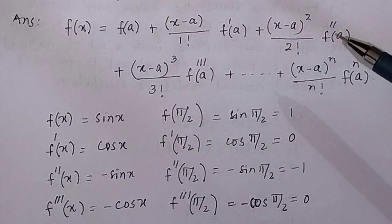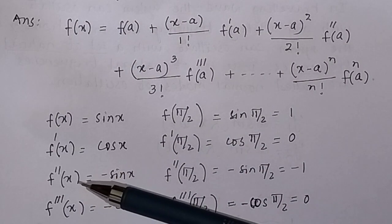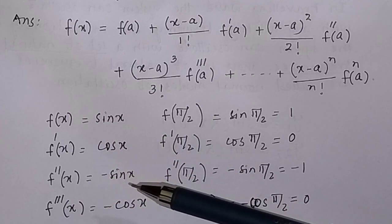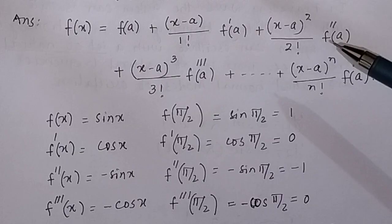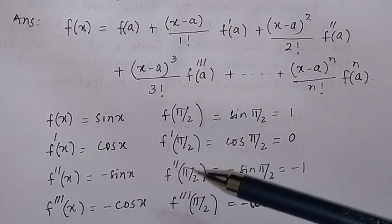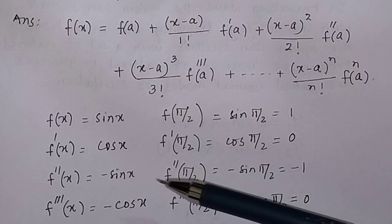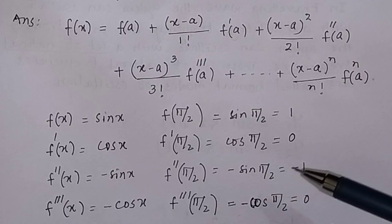Similarly, in the third term we have the second derivative. f''(x) = derivative of cos(x) = -sin(x). So the second derivative at x = π/2 is f''(π/2) = -sin(π/2) = -1.